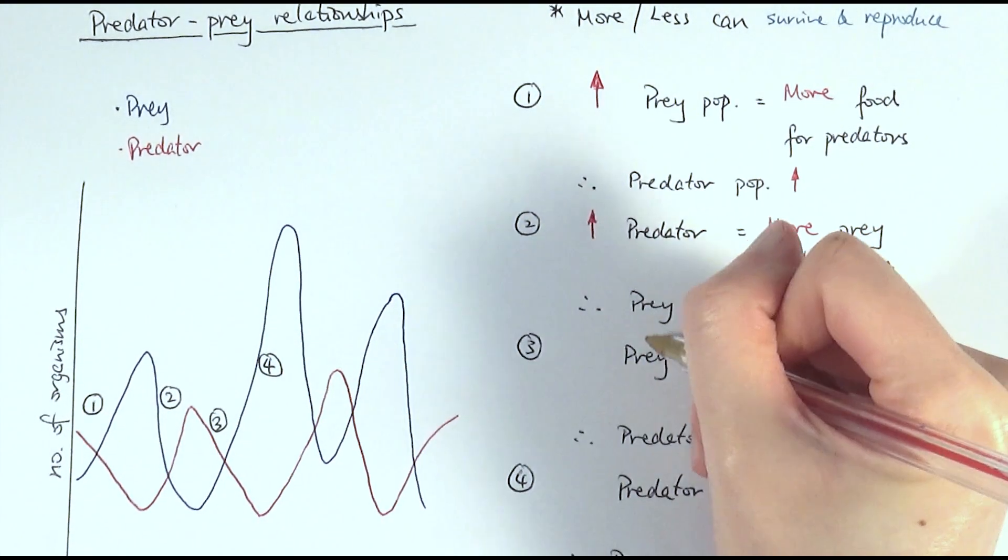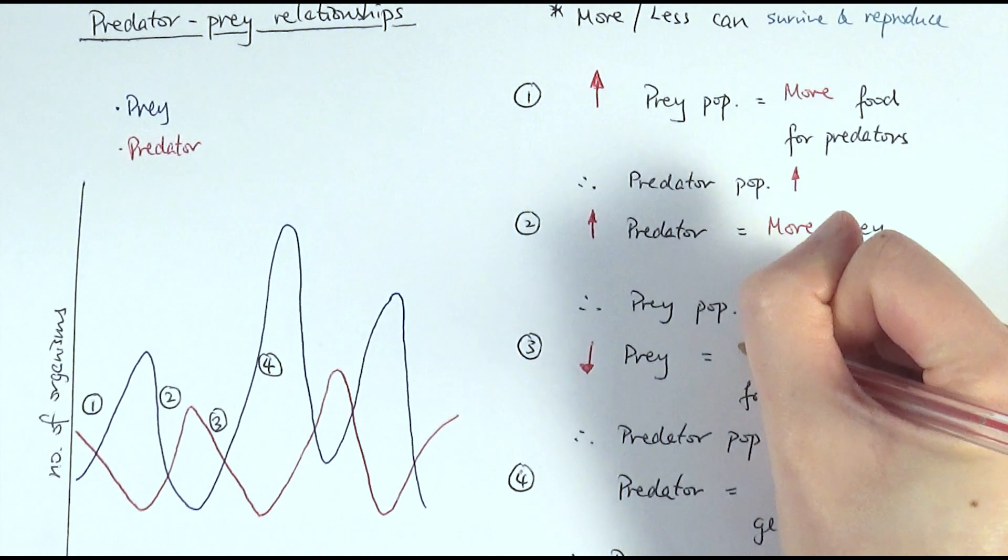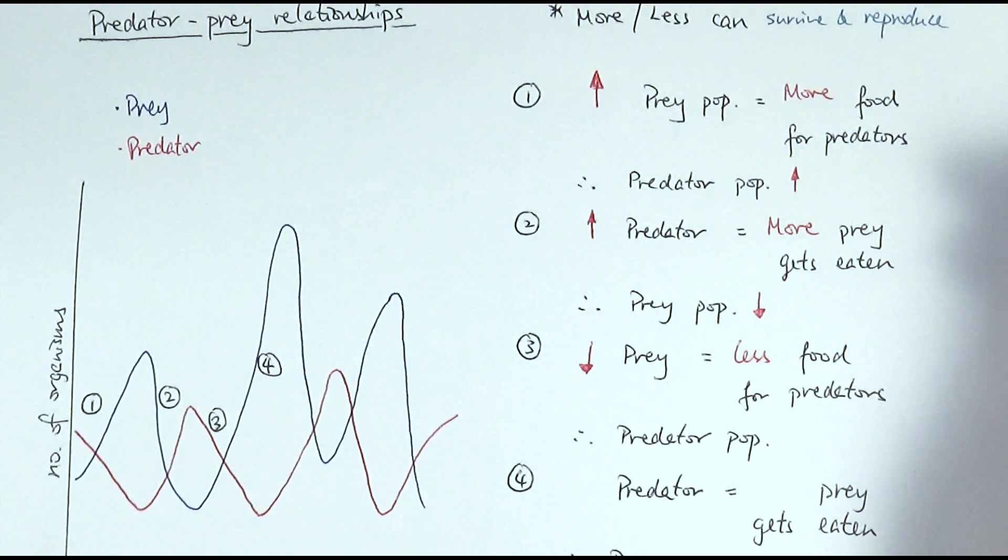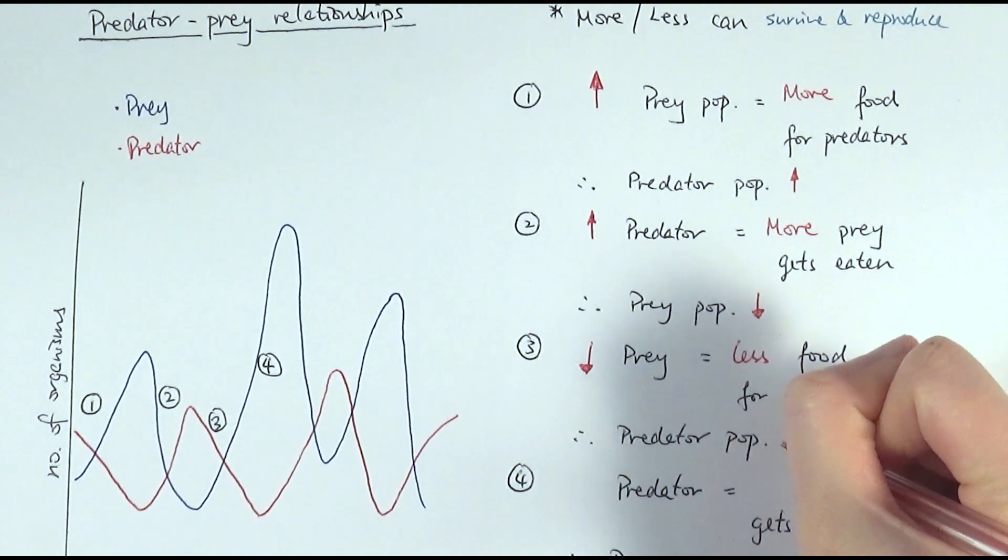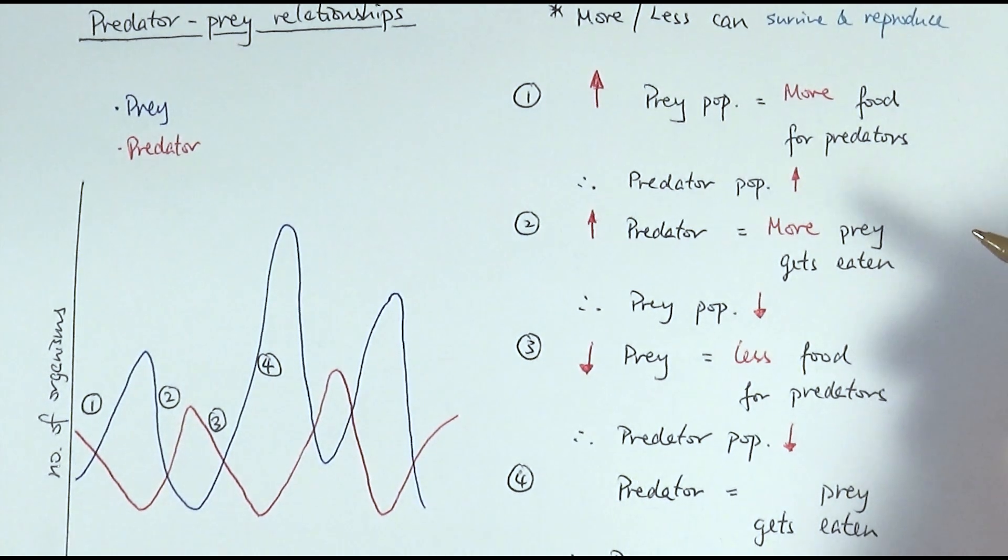And then the third stage, as there is less prey available, that means less food available for the predators, therefore the predator population would decrease as well, because less predator can survive and reproduce due to the loss of food source.